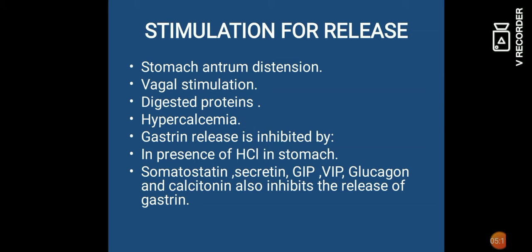Stimulation for release: stomach antrum distension, vagal stimulation। इसके stimulation के लिए dietary food — digested food, सबसे ज़्यादा protein, hypercalcemia। Gastrin release inhibited किससे होता है — यदि stomach में HCl उपस्थित है तो gastrin का release inhibit हो जाता है। Somatostatin, secretin, GIP, VIP, glucagon, and calcitonin — यह सभी gastrin के release को inhibit करते हैं।